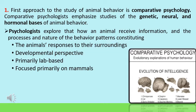The first approach is comparative psychology. As the name suggests, different comparisons are made between the psychology of different animals. Comparative psychologists mainly emphasize studies of genetic makeup, neural network, and the hormonal basis of animal behavior. Psychologists conduct experimental studies in both laboratory and field settings related to animal learning — whatever the animal is learning from its environment — and to the development of behavior.